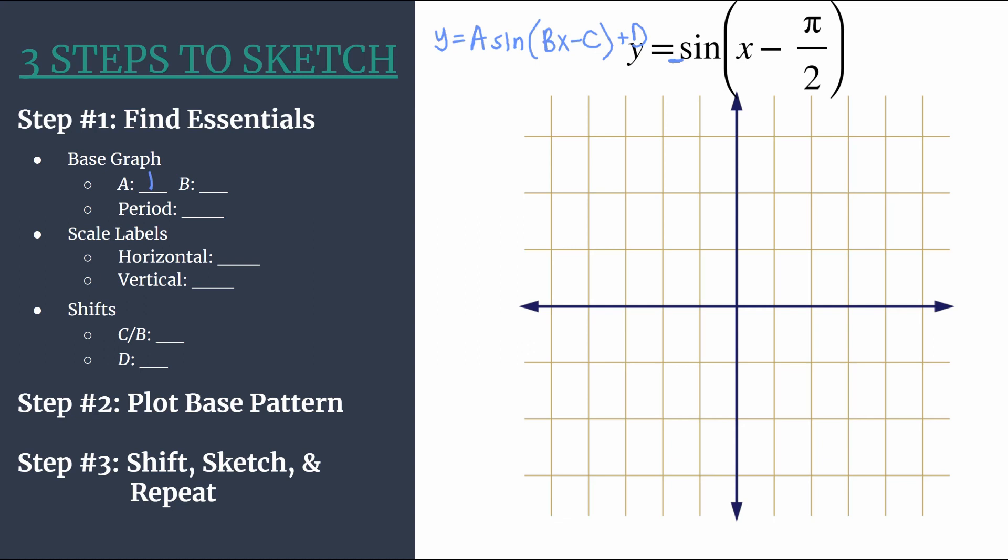A tells us the amplitude, so that's the distance from midline to maximum or midline to minimum. It's the same as the parent function, it'll be the same as y equals sine x. And then B is the coefficient of x which is also an understood one. So B tells us how many cycles happen between zero and two pi, so we'll have just one cycle again like the parent function.